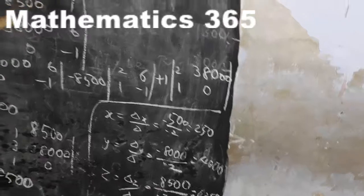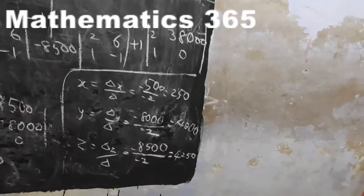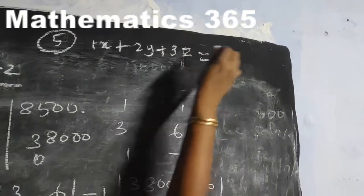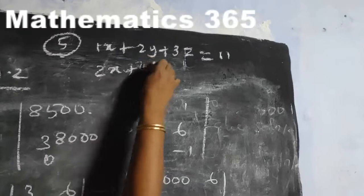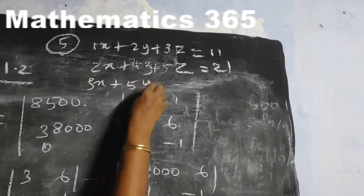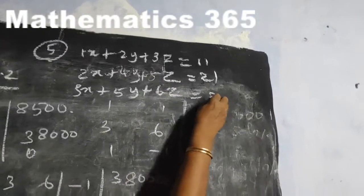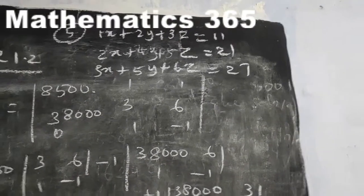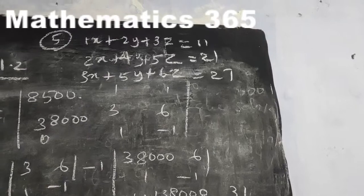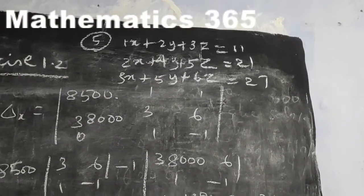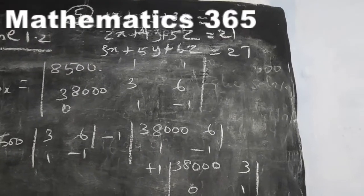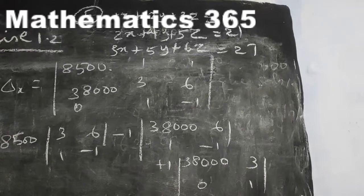The 5th sum is homework. Now the 5th sum: 1x plus 2y plus 3z equal to 11; 2x plus 4y plus 5z equal to 21; 3x plus 5y plus 6z equal to 27. Set up the table, put in Delta, Delta X, Delta Y values and complete this sum using the same method. Grammar rule — that's all. More examples will be in the next class.